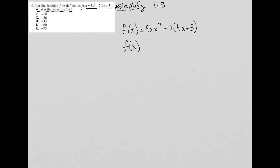So we'd have f(x) = 5x². Now I can distribute this negative 7 across the parentheses. So I'd have -28x and -21. So there's my simplified version of the function.